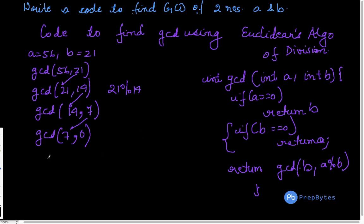Now let's say we have A as 21 and B as 56. What happens in that case? So in that case, let's see what happens. Initially GCD 21, 56 is called.